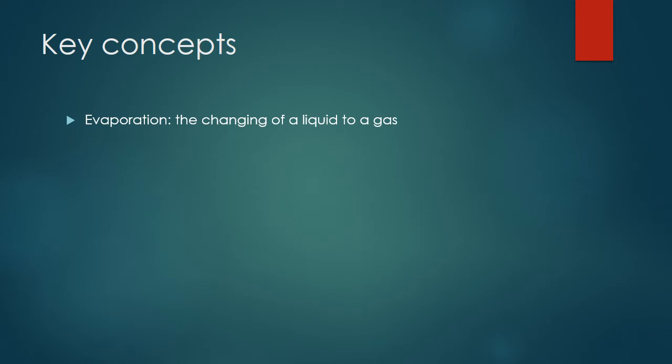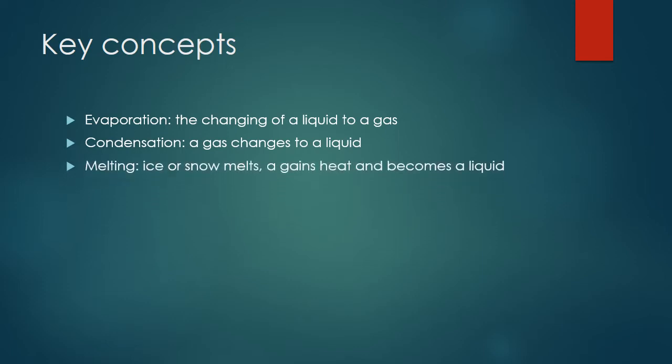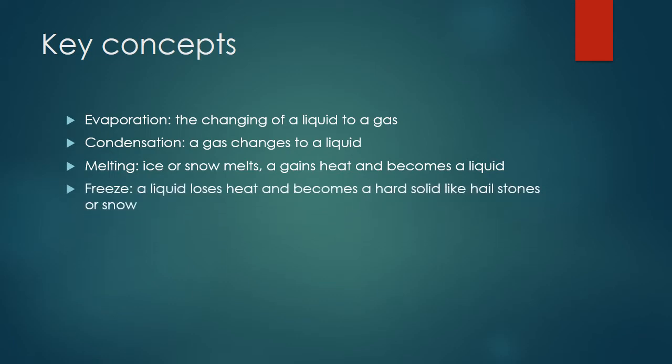Key concepts: Evaporation, Condensation, Melting — when ice or snow melts, it gains heat and becomes a liquid. In freezing, a liquid loses heat and becomes a hard solid like hailstones or snow. It is important to know that in the water cycle, all of these states of change of matter take place.